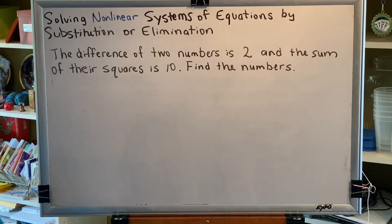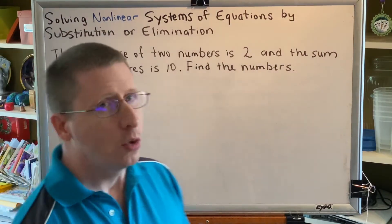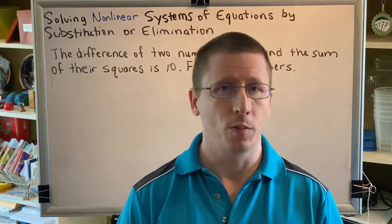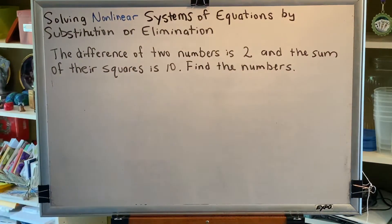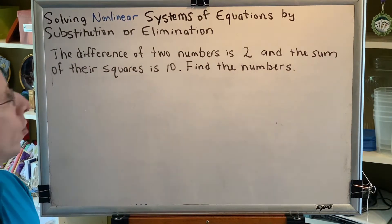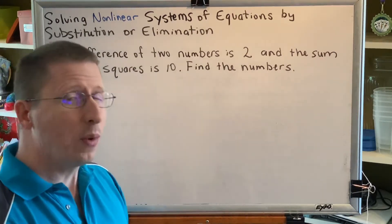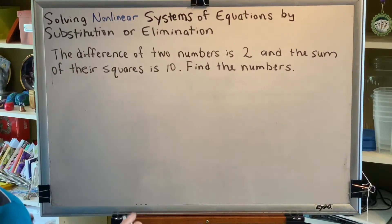This problem has been given to us in words, which means we're responsible for creating the algebraic system ourselves. The first step in doing that is to define our variables. The sentence says the difference of two numbers is 2. Find the numbers. So we know we're looking for two numbers. Let's call them x and y.